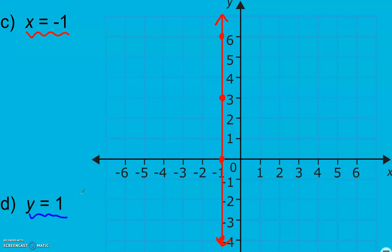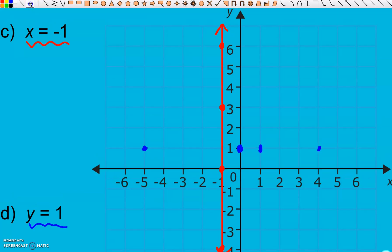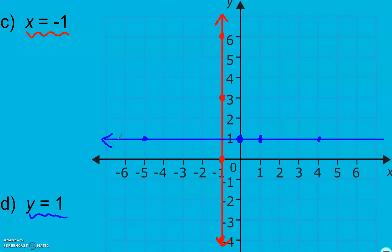y equals 1. My y-intercept at 1 here and we want every point that makes it true. So for example, 1, 1 has a y value of 1. 4, 1 has a y value of 1. Negative 5, 1 has a y value of 1. So y equals lines are always going to be horizontal through our intercept. And again arrows to show it continues.